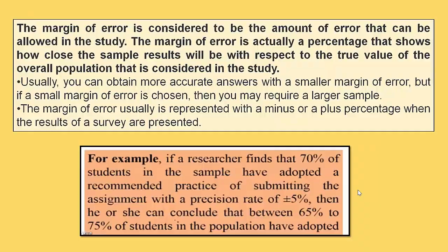Now look at the first point: margin of error, which is denoted by E, and in some books it is denoted by M. Margin of error is the percentage that shows how close the sample result will be with respect to the true value. Basically, margin of error is the amount of error that can be allowed in your study. Margin of error is always in the form of plus or minus.